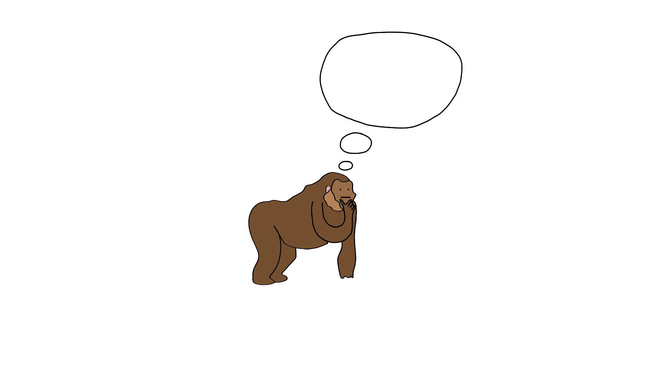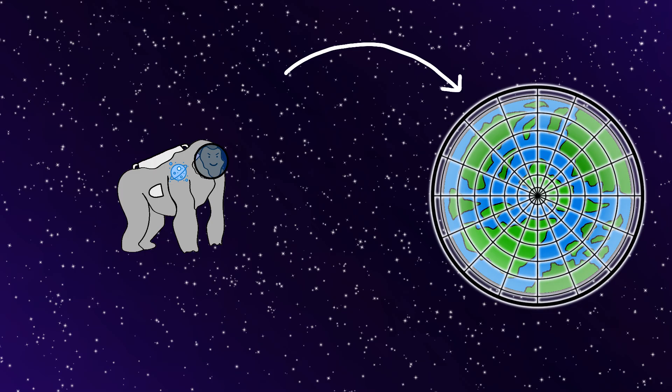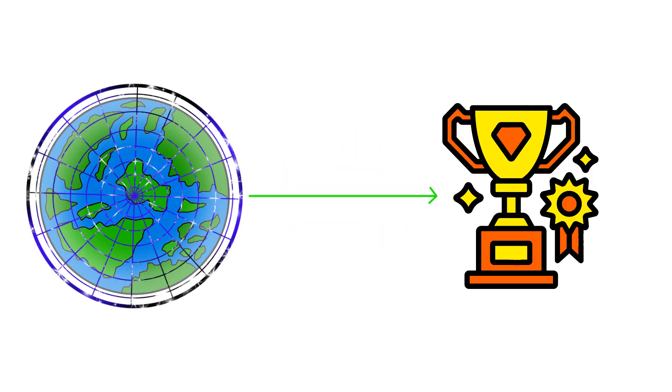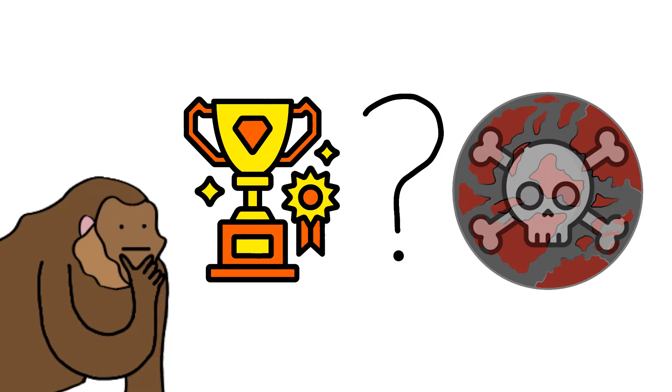So Monkey starts thinking about this Dyson Sphere idea, and Monkey realizes, wait, everyone builds these things around stars. But what if Monkey flips the script and puts Earth inside one instead? And Monkey's brain starts spinning, because this could either be the greatest achievement in human history or the most catastrophic mistake ever made. And honestly, Monkey's not sure which one it's going to be.